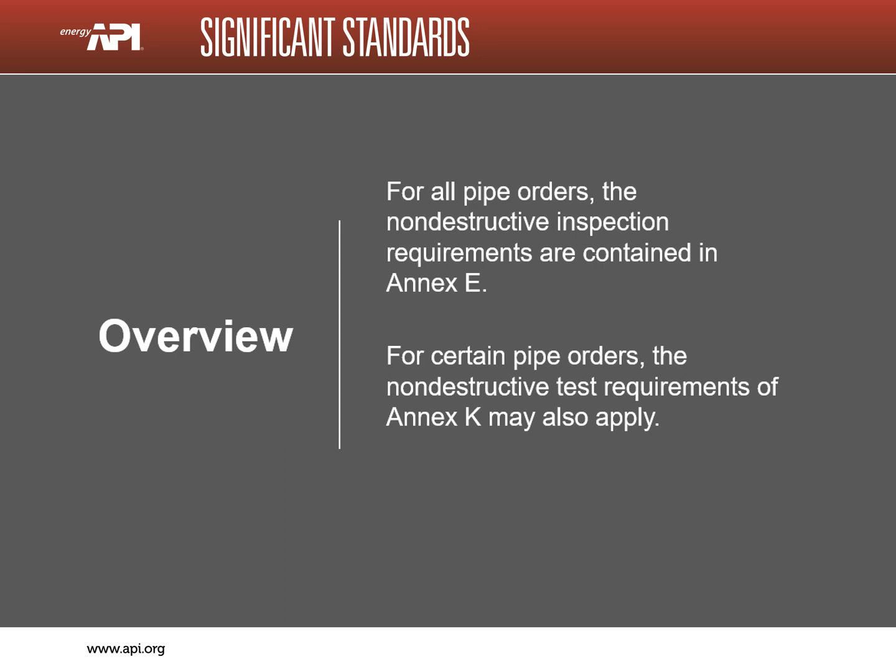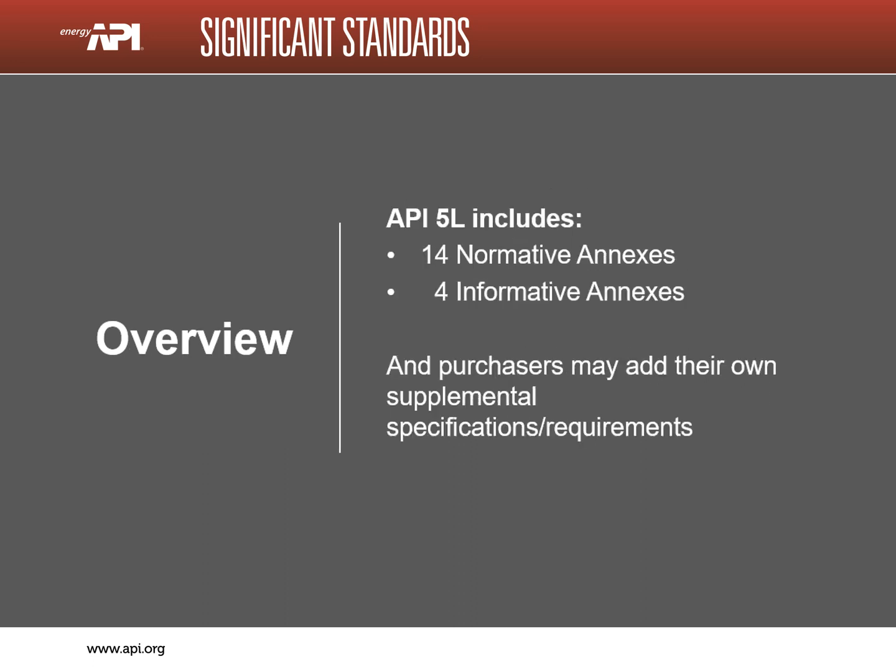The requirements for non-destructive testing are covered in Annex E. For certain orders of pipe, the non-destructive requirement of Annex K may also apply. In addition to the main body of text, there are 19 annexes, Annex A through Annex P, and purchasers may add additional requirements from their company's supplemental specification.